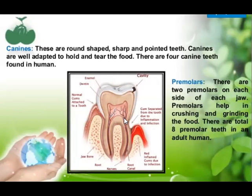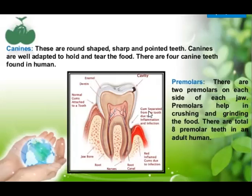What you have to remember is that the external structure of the tooth has crown, neck, and root, and internally it has enamel, dentine, and pulp. In the next session, we will discuss about the types of tooth and tooth decay also.